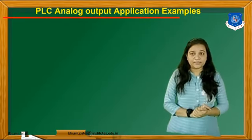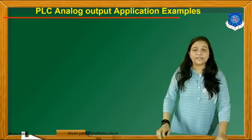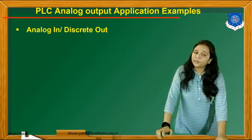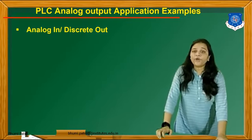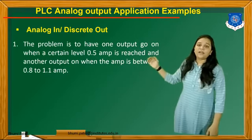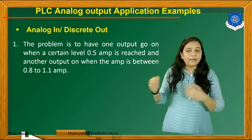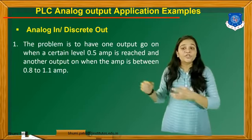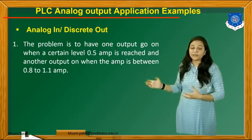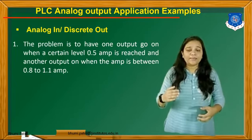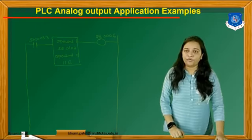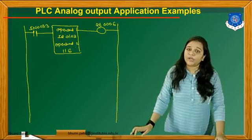The next application covers different types of PLC analog output application examples. The first example is analog input with discrete output. If we apply analog input to the system and want discrete output, the requirement is: one output goes ON when the level reaches 0.5 ampere, and another output goes ON when the ampere is between 0.8 and 1.1 ampere. We have to draw the ladder diagram for this process.